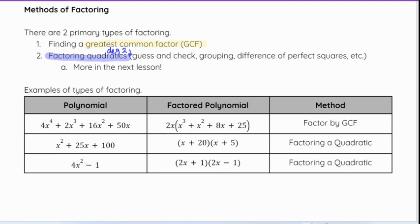But some examples of factoring. You can see here the original polynomial in this blue column here on the left. And then the yellow is once we have factored it, that's what it looks like. So for example, here we can pull out what we call a greatest common factor, which we'll get into a little bit more here in a little bit. But that is considered factoring by GCF. And then when we factor into these two binomials here, both of these are considered factoring a quadratic.